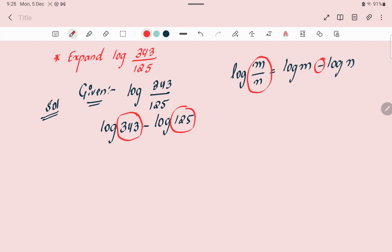49 divided by 7 is 7, 7 divided by 7 is 1. So 7 is repeating three times: log 7 to the power of 3 minus log. Now take out the prime factorization of 125.